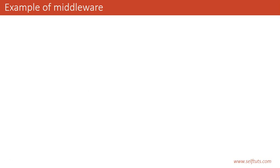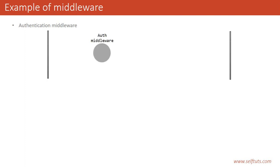The concept will be clearer through an example. Suppose you have more than five resource endpoints like get user, get user by ID, delete user, and post user. Every route needs authentication because if the user is not authenticated, they should not be able to get user data or delete a user. So every GET and POST call requires authentication. There is a middleware with the responsibility for authentication. Before reaching the get route middleware, authentication will be done and then the request will be passed to the next middleware.